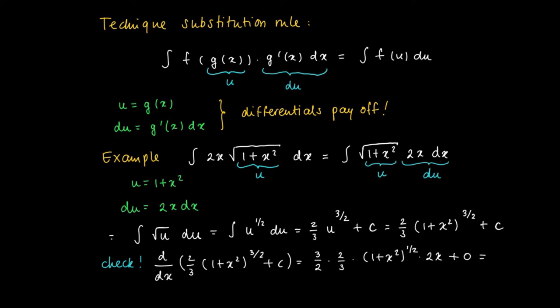Times the derivative of the inner function, which is 2x. So indeed we get the square root of 1 plus x squared times 2x as the derivative of this function. So this is correct.